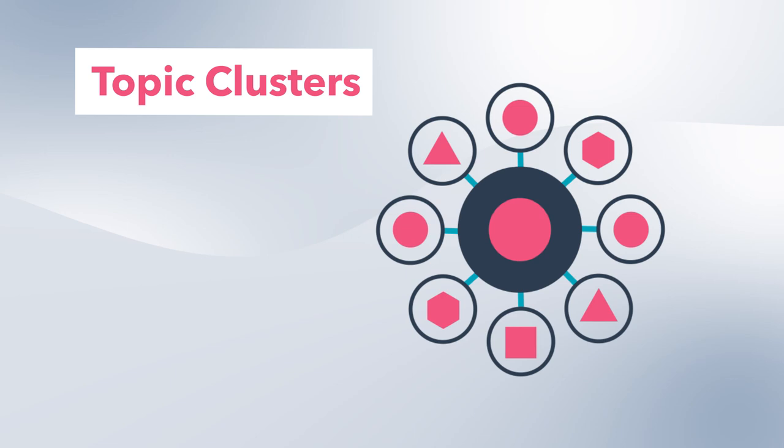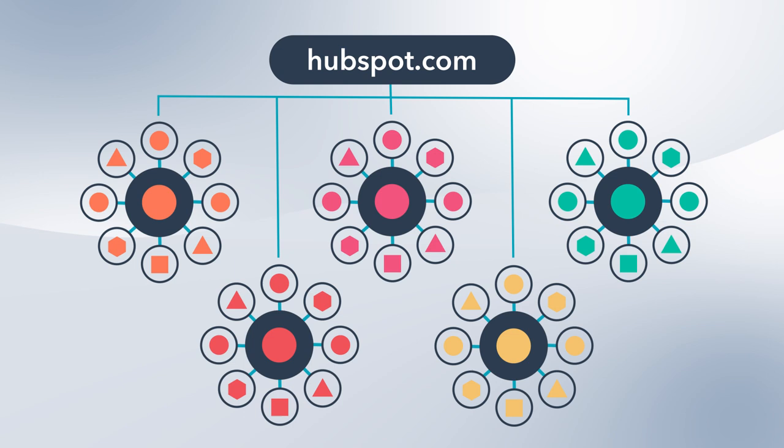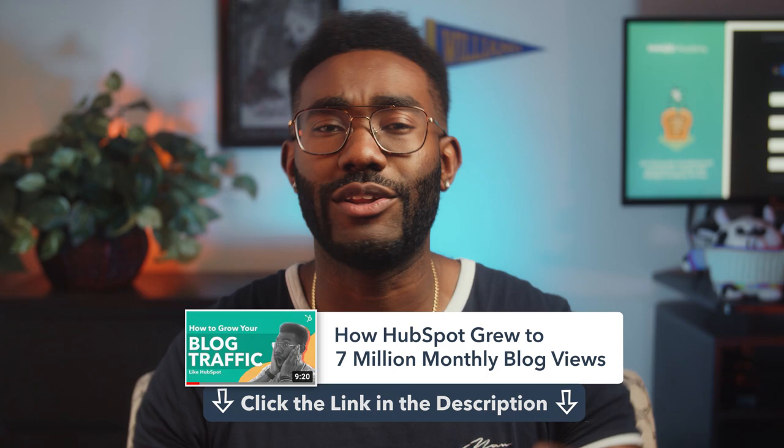The solution was not to look at individual posts, but rather at topic clusters that could share lead gen content. A cluster is a series of blog posts all built around a central pillar topic. This is how HubSpot organizes thousands of blog posts for efficiency and SEO optimization. We had hundreds of pillars that needed lead generating content, but as AJ will tell you, the results were well worth the effort.